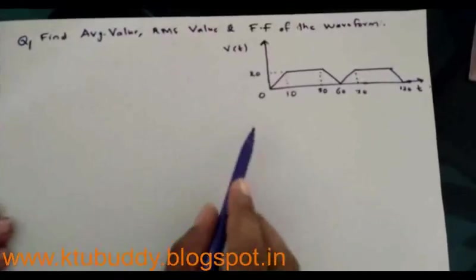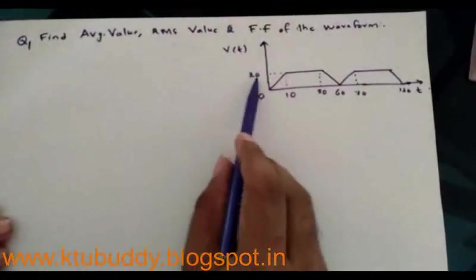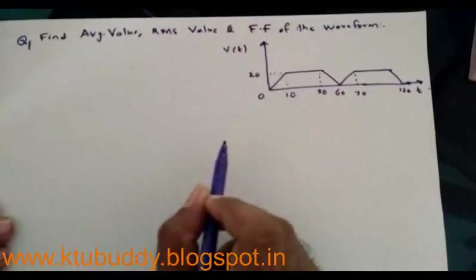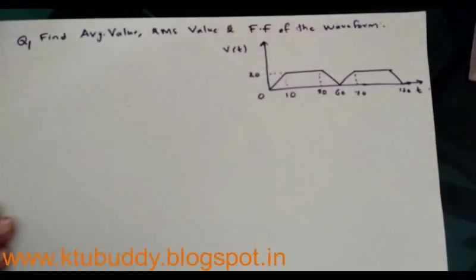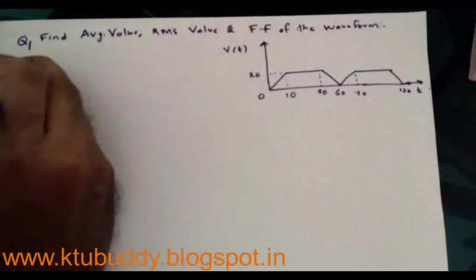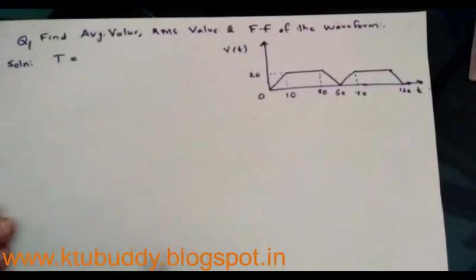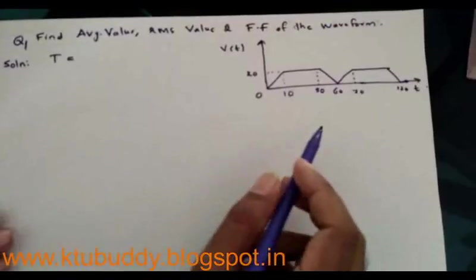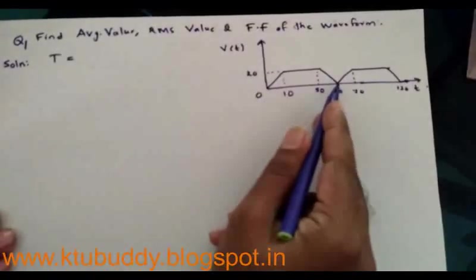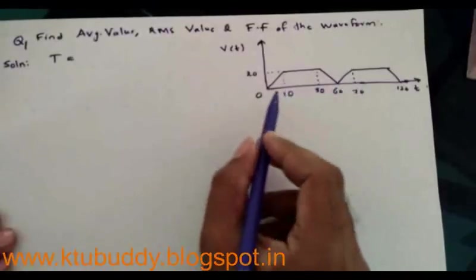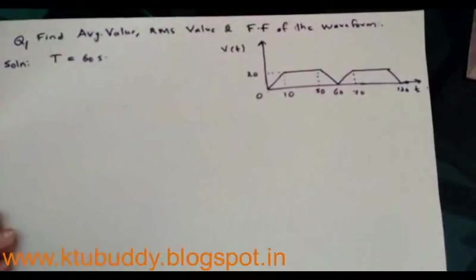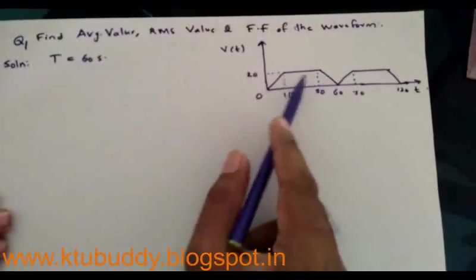First, let's determine the average value of the given waveform. Analyzing the waveform, it is clear that the waveform has a peak value of 20 volts, and its time instances are shown on the x-axis. The time period T is the time taken to complete one cycle. It can be determined from zero to the instant where the waveform starts to repeat itself — that is, from zero to 60. So the time period of the waveform is 60 seconds.